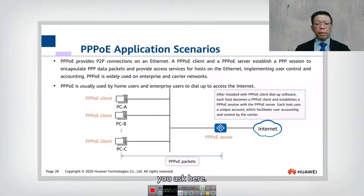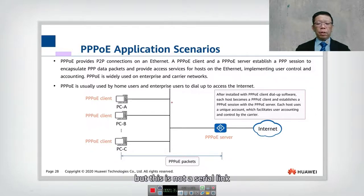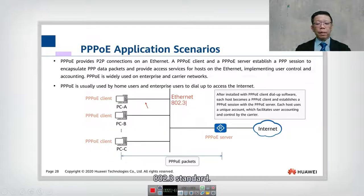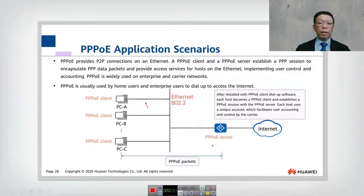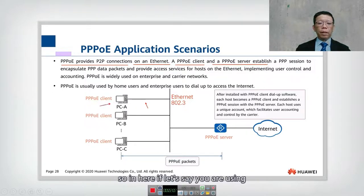The use case for PPPoE: if you want to connect to the internet using dial-up, you will use PPPoE. However, PCs don't use serial links — they connect to a switch using Ethernet and the 802.3 standard. So to use Ethernet while still connecting to the BRAS, we use PPPoE, which provides a point-to-point connection over Ethernet between a PPPoE client and a PPPoE server.